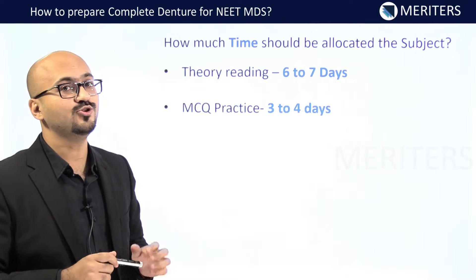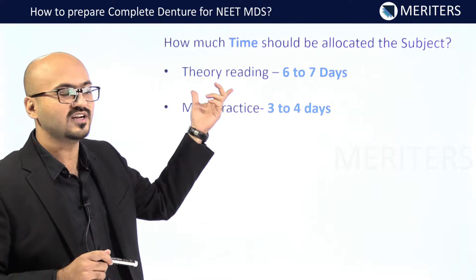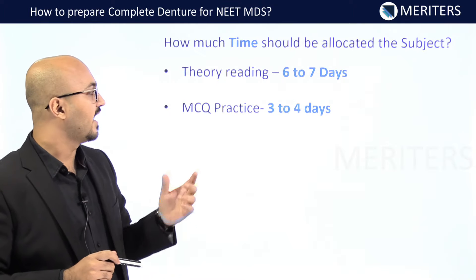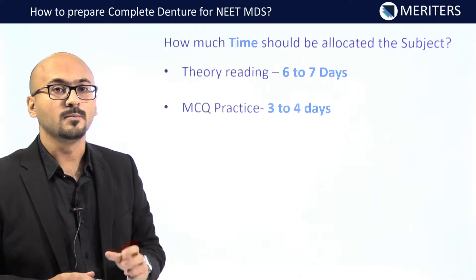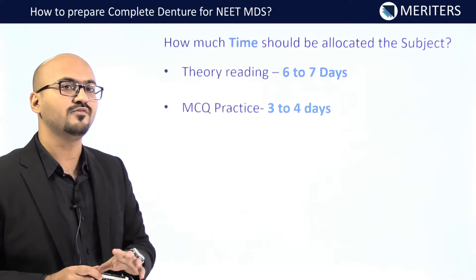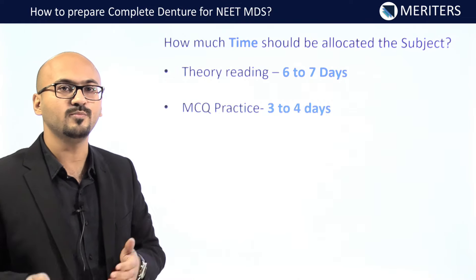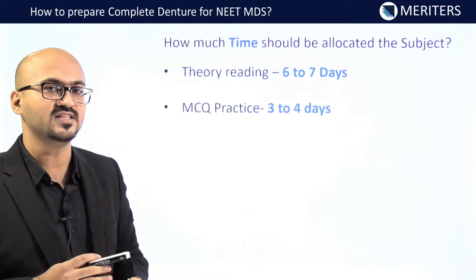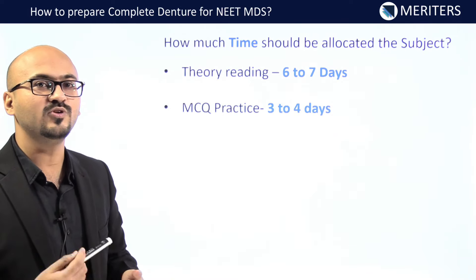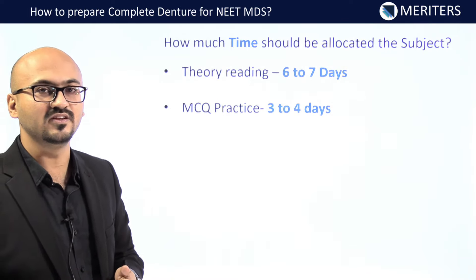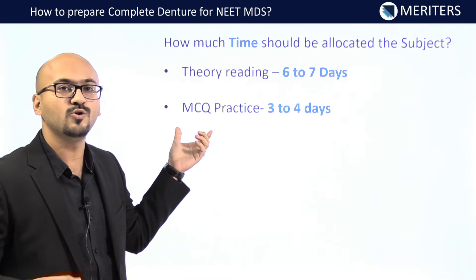Theory reading will require around six to seven days and MCQ practice around three to four days. If you feel confident with your theory early on, you can allocate more time to MCQ practice and vice versa. Since this is a volatile subject, keep revising theory — strong theory will make MCQ practice go faster.